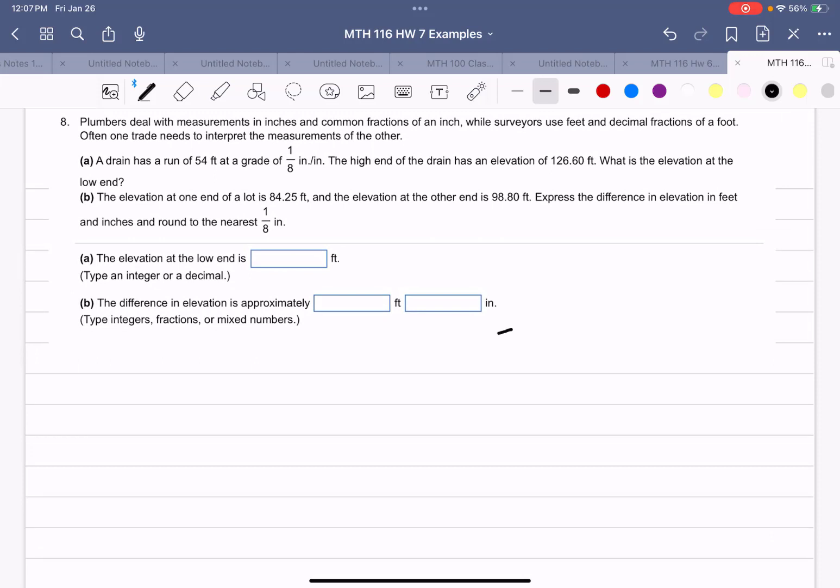So we've got this 54 feet, and it's dropping 1/8 of an inch per inch. Now, our problem is 54 feet needs to be in inches because we need our units of the drain and the grade to be the same. So 54 times 12 gives me 648 inches.